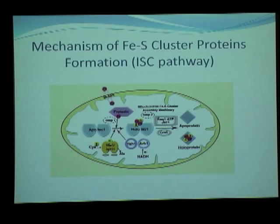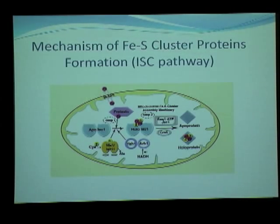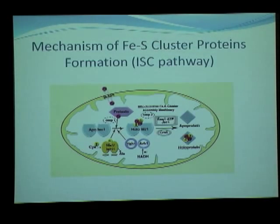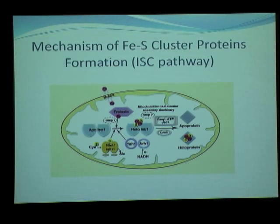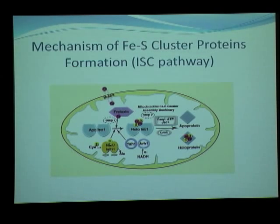Frataxin is the eukaryotic ortholog of CyaY, which is the protein I have concentrated upon in my project. This is a very controversial protein because many people say it acts as an iron chaperone. But others say it is a gatekeeper which helps regulate the amount of iron-sulphur clusters produced according to the number of target proteins available. Some say it is actually responsible for bringing the iron and assembling it onto the scaffold protein, not ISCA. So it is a very controversial protein and that is why it is very interesting to study.